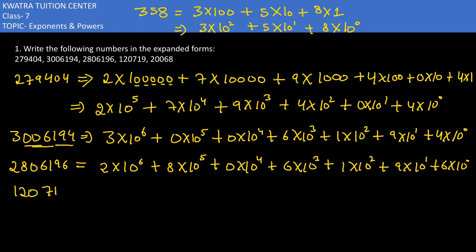Then you have the next number 120719. 1 is at lakhs place, so 10⁵, then 2 into 10⁴, 0 into 10³, then we have 7 which gives us 10², then 1 ke saath 10¹, and 9 ke saath 10⁰.